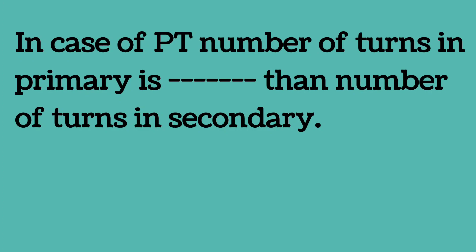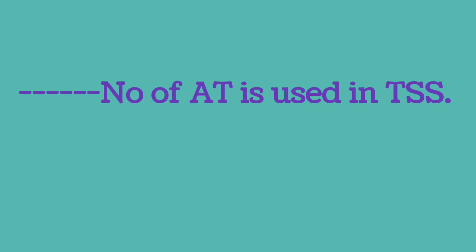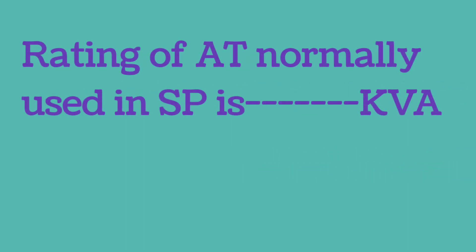In the case of a PT, the number of turns in the primary is more than the number of turns in the secondary. Two numbers of AT are used in TSS. The rating of AT normally used in an SP is 10 KVA.